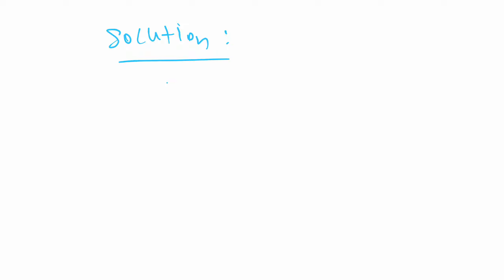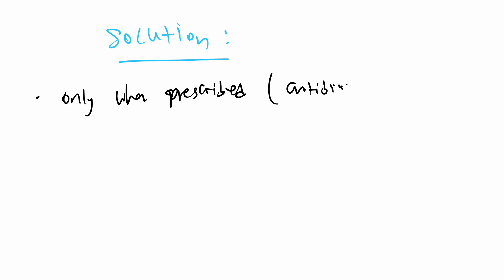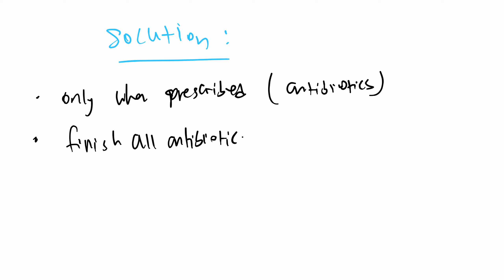So what exactly is the solution to this problem? You need to make sure that you only take antibiotics when your doctor tells you - only when prescribed. Most often if you go to pharmacies you can't buy antibiotics yourself, you need a doctor's note. And finish all antibiotics provided. If your doctor prescribes you an antibiotic, you have to take the entire pill box so that all the bacteria can be killed - not leaving even one behind, because even one can asexually reproduce and create an entirely new colony.